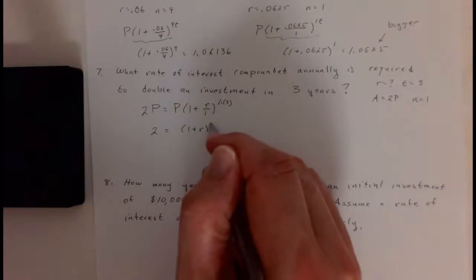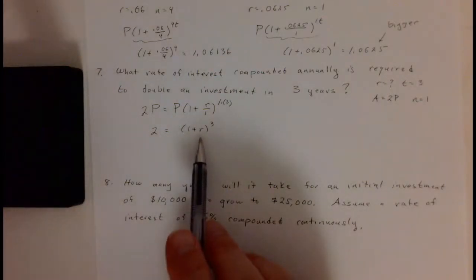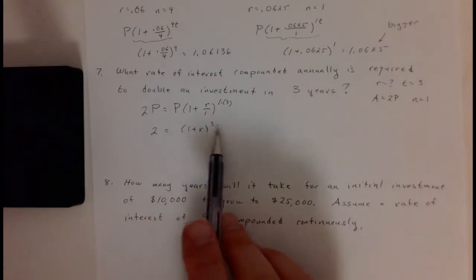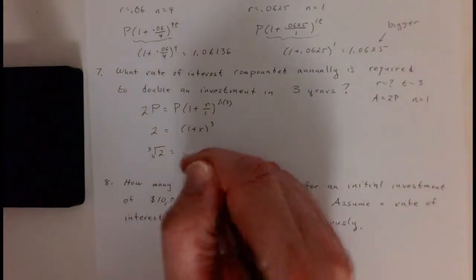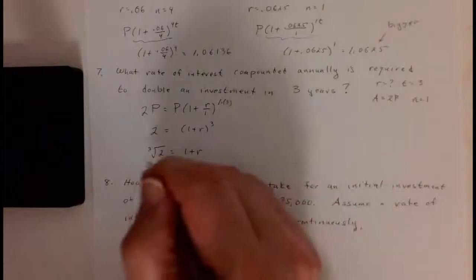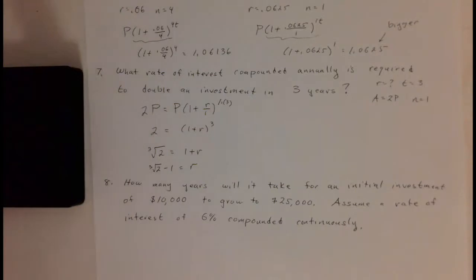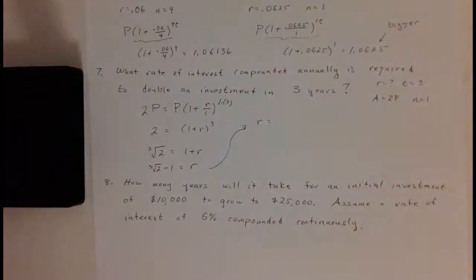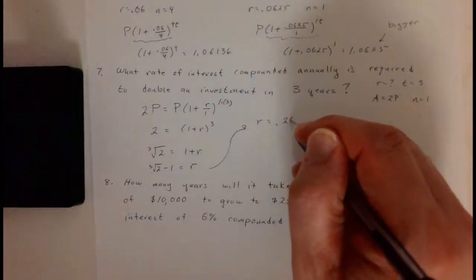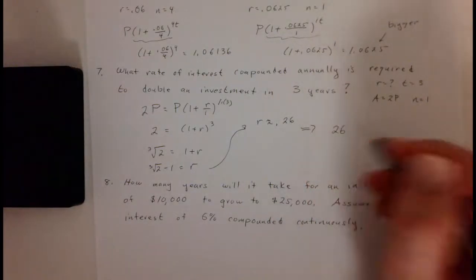When you simplify, you can cancel the P's, and this boils down to two equals one plus R raised to the third power. To solve for R, we take the cube root of both sides and then subtract one. So R equals the cube root of two minus one. Plugging this into your calculator gives approximately point two six, which means the interest rate would need to be twenty-six percent.